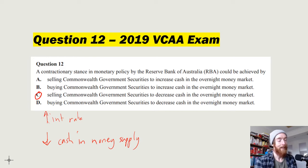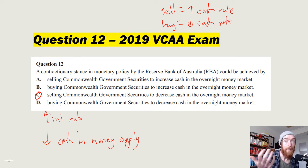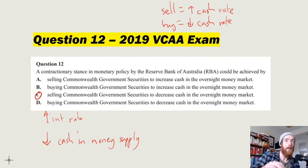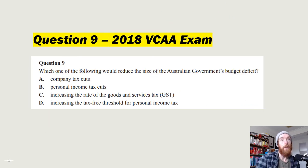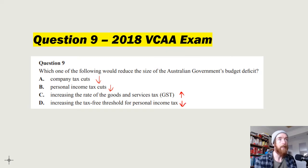Next question: 'Which of the following would reduce the size of the government's budget deficit?' Options: company tax cuts — decreases revenues; personal income tax cuts — decreases revenues; an increase in the rate of the GST — increases revenues; increasing the tax-free threshold — decreases revenues. Only increasing the GST rate raises more revenue, which reduces the deficit. Answer: C.